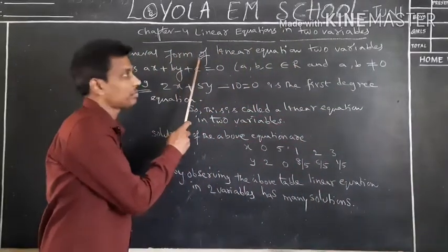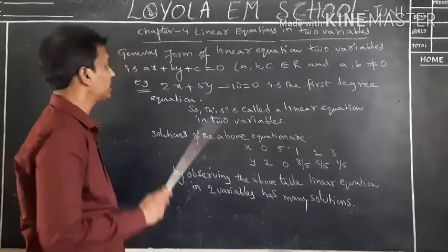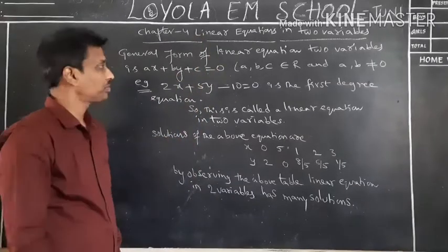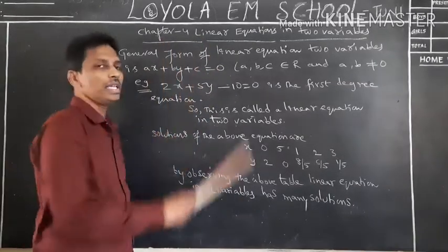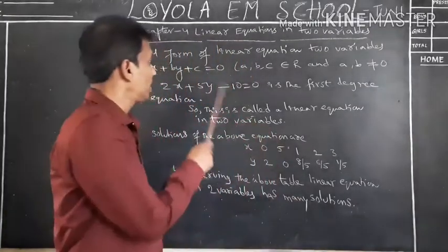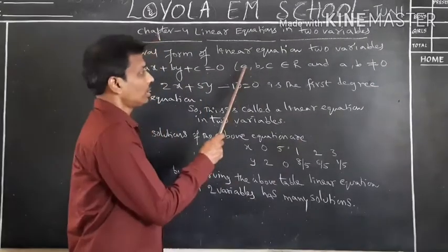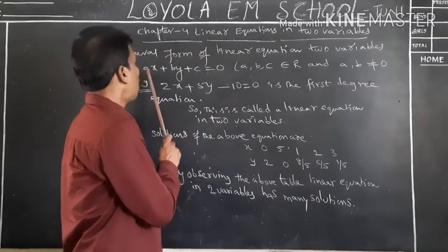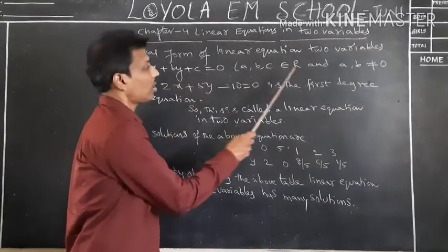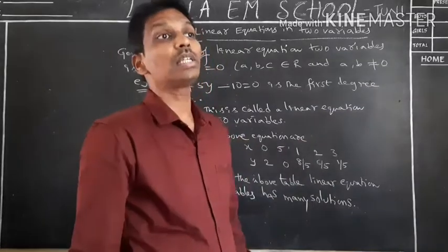The general form of a linear equation in two variables is ax + by + c = 0. Here, a and b are the coefficients of x and y variables, and c is called a constant. All the coefficients are constants — that means a, b, c belong to the set of real numbers. Also, a and b are both not equal to zero.